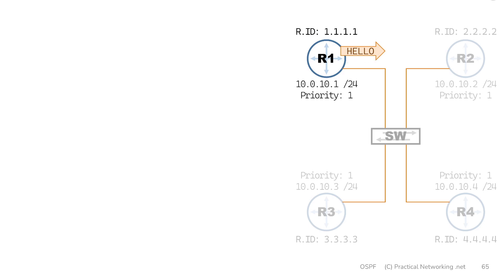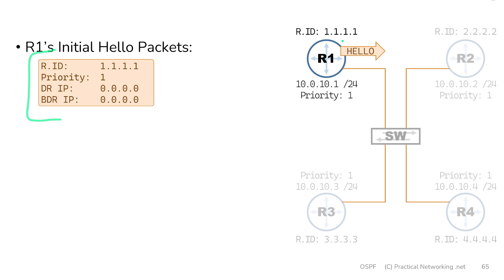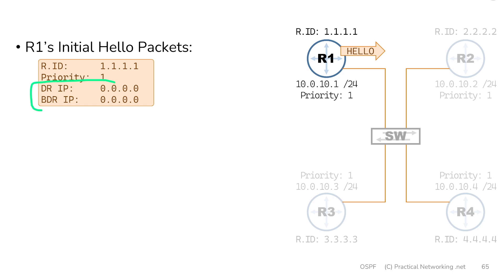We unpacked all the pieces of information inside hello packets in a previous lesson. For this lesson, we just want to highlight these four fields. Router 1 is going to include its own router ID of 1.1.1.1, its currently configured priority number which is the default of 1, and then these two fields indicating that router 1 currently believes the DR and the BDR to be 0.0.0.0. This means router 1 doesn't currently know who the DR and BDR are on this link, which makes sense because we just turned router 1 on.